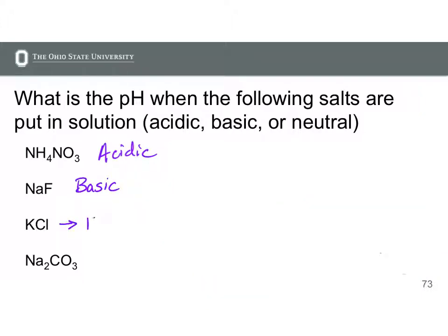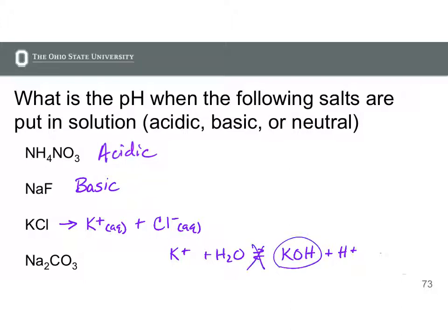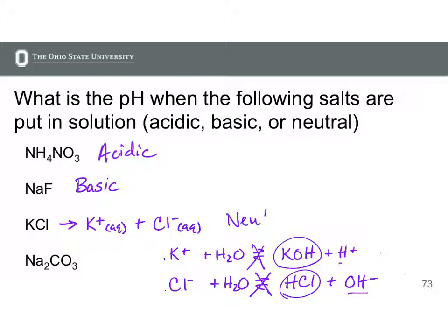When we put KCl in solution, it produces potassium ion plus chloride ion. If we react each of these ions with water: K+ could form KOH plus H+, but KOH is a strong base so this reaction does not occur. Cl- with water would form HCl and OH-, but HCl is a strong acid so this equilibrium doesn't occur either. The strong base and strong acid both completely dissociate, so H+ and OH- would never form from these ions, and the pH is not affected — we end up with a neutral solution.